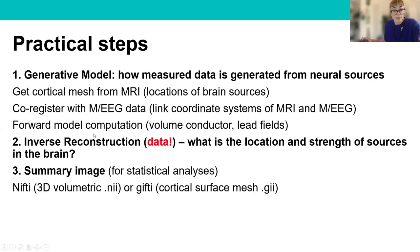Finally, we need to compute our forward model, where we choose a volume conductor and compute our lead fields. The lead fields tell us the mapping from activity in a neural source to the sensors. The next step is to perform the source reconstruction itself — asking what is the location and strength of sources in the brain based on our data and generative model. Then we summarize our data, which is useful if we're performing statistical analyses.